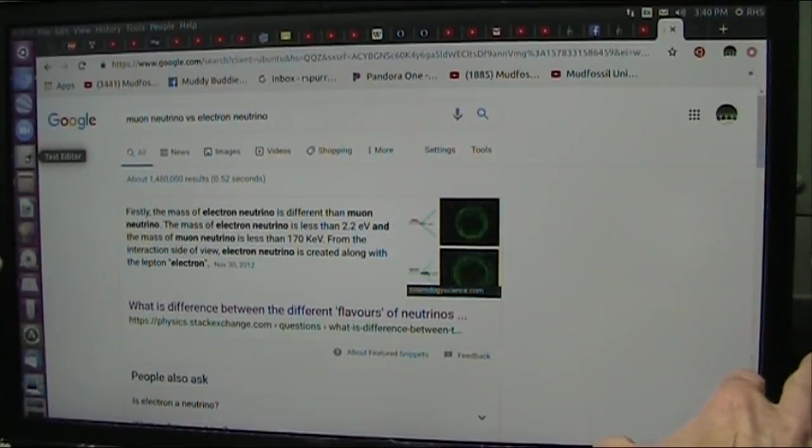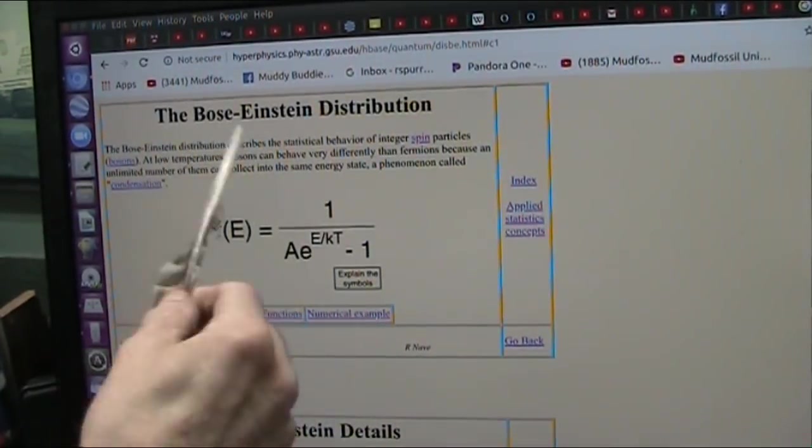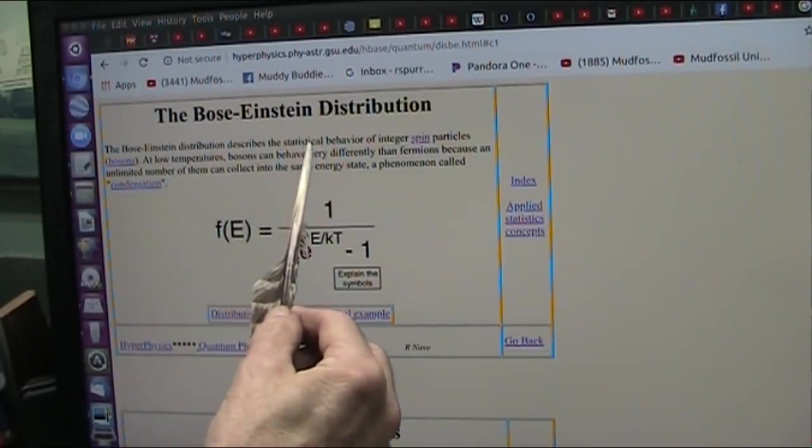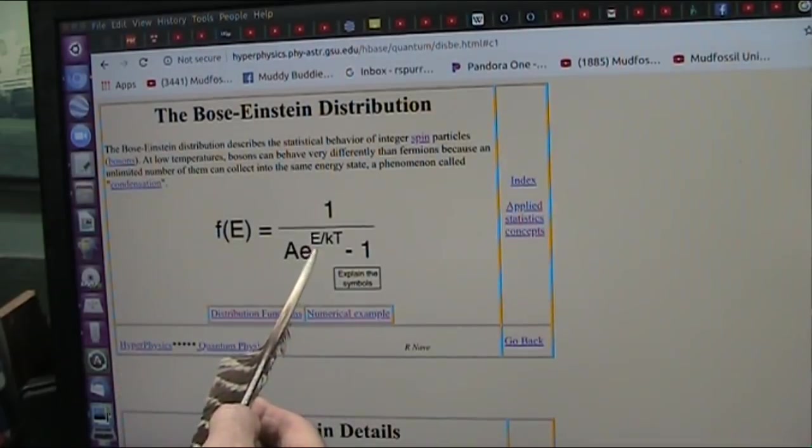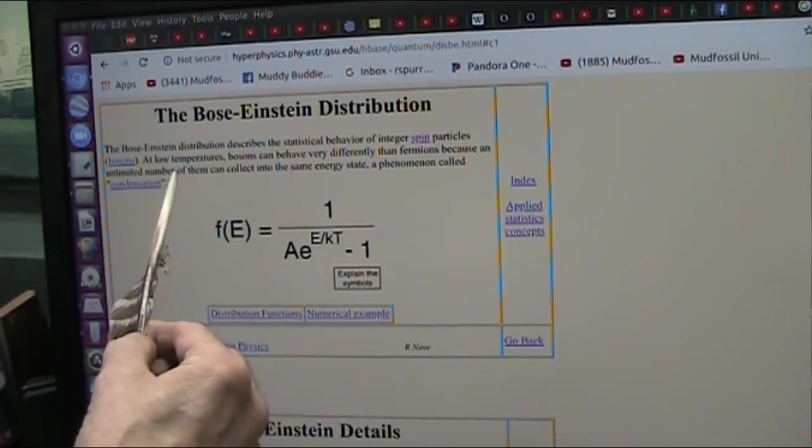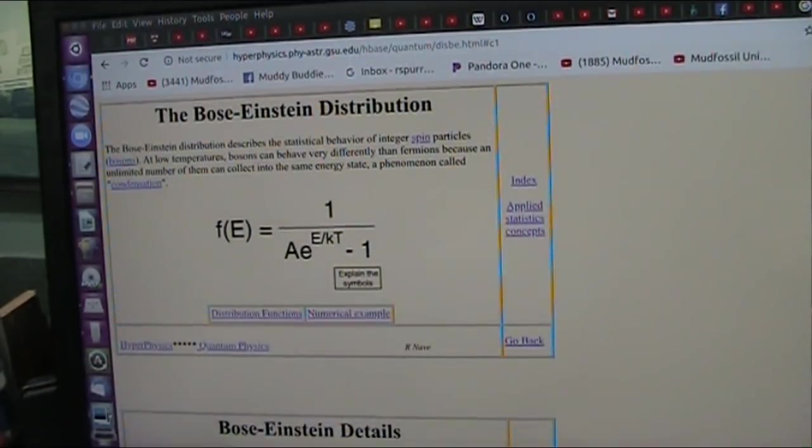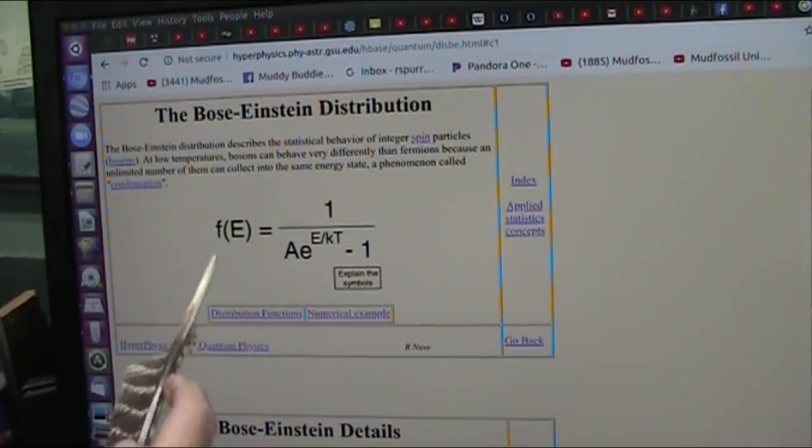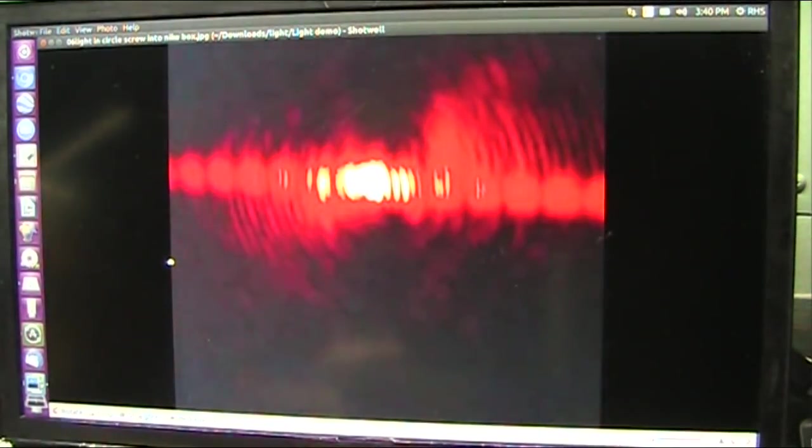Bose-Einstein condensate is nothing more than pulling every electron out, and then the energy stabilizes. This is fully understood with electron flood theory. This talks about Bose-Einstein condensates—the distribution describes statistical behavior of integer spin particles at low temperatures. At low temperatures, you can have all the same. They can collect into the same energy states, a phenomenon called condensation. All that means is you sucked out all the extra electrons. They're all at their lowest energy state, which means they are condensate.